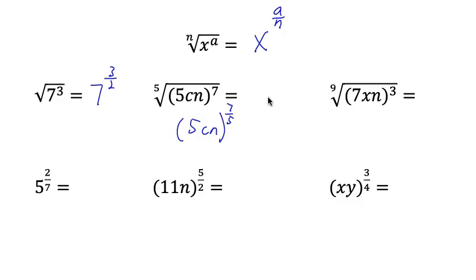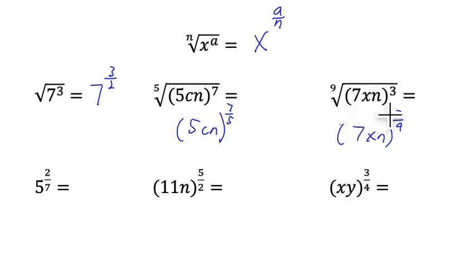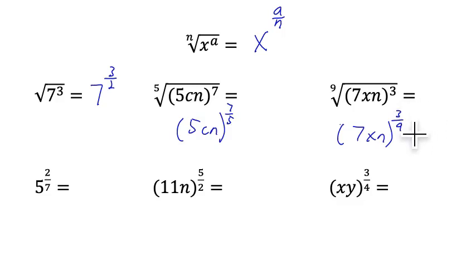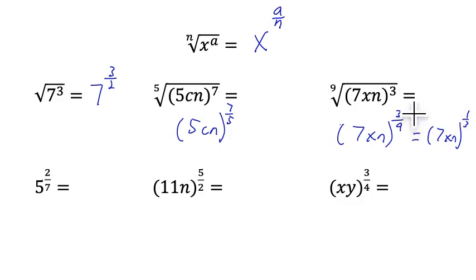So we're rewriting these radicals with rational exponents. When we simplify the 9th root of 7xn to the 3rd power, we get 7xn raised to the 3 9ths power — the root is in the denominator and the power is in the numerator. We can actually simplify that rational exponent: 7xn raised to the 1 3rd power, because 3 and 9 are both divisible by 3.